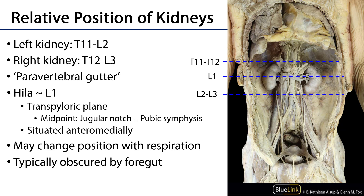In terms of relative positions, the left kidney tends to be a little higher than the right kidney. The left kidney tends to have its superior pole at about the T11 vertebral level and its inferior pole down to the L2 level — so T11 through L2. The right kidney tends to be a little lower because of the large liver occupying the right upper quadrant; its superior pole is at about T12 and its inferior pole at the L3 level.